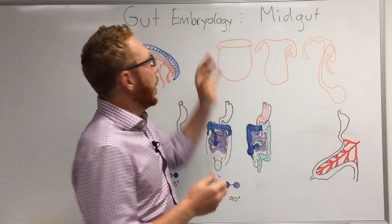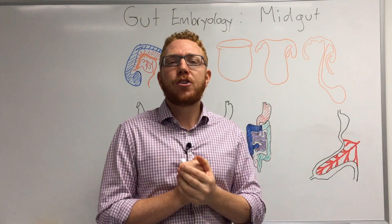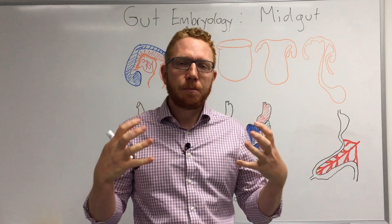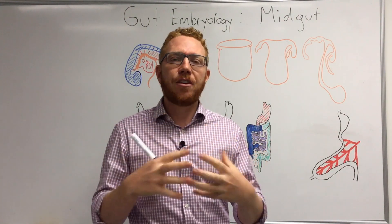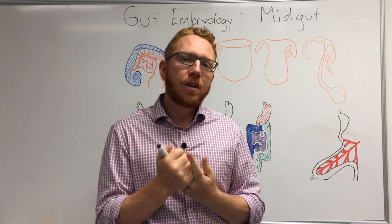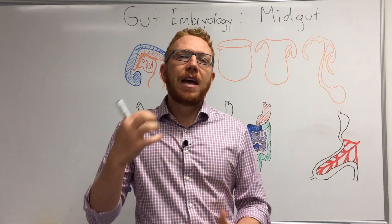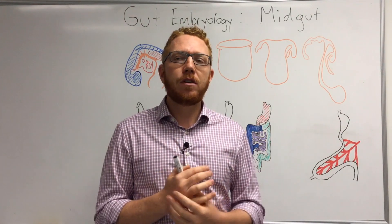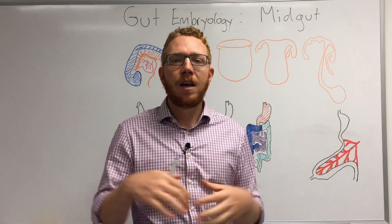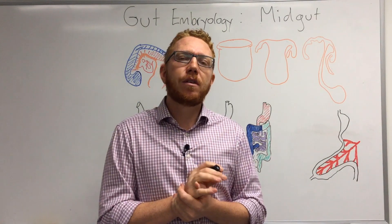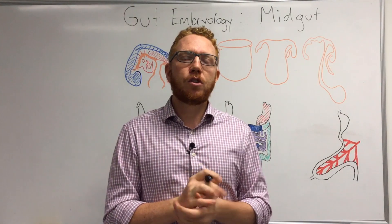Welcome to the second lecture on gut embryology. Today we'll be talking about the mid-gut. The take-home points I want you to know: where does the mid-gut start and end — this is particularly important for adult anatomy. We want to know the arterial supply of this part of the gut, the main embryological events including how the gut rotates and herniates, and we'll finish with a couple of clinical correlates.